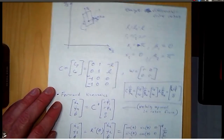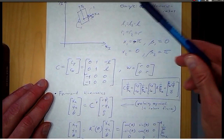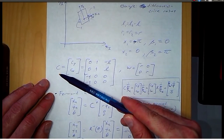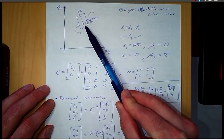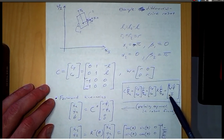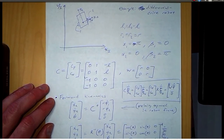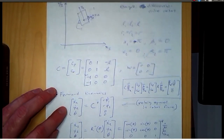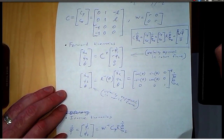These two solutions come from an understanding of how the constraint coefficient matrix is defined — that is, the definitions of alpha and beta — and then manipulating the constraint equation to determine different unknowns: psi-dot for forward kinematics or phi-dot for inverse kinematics.